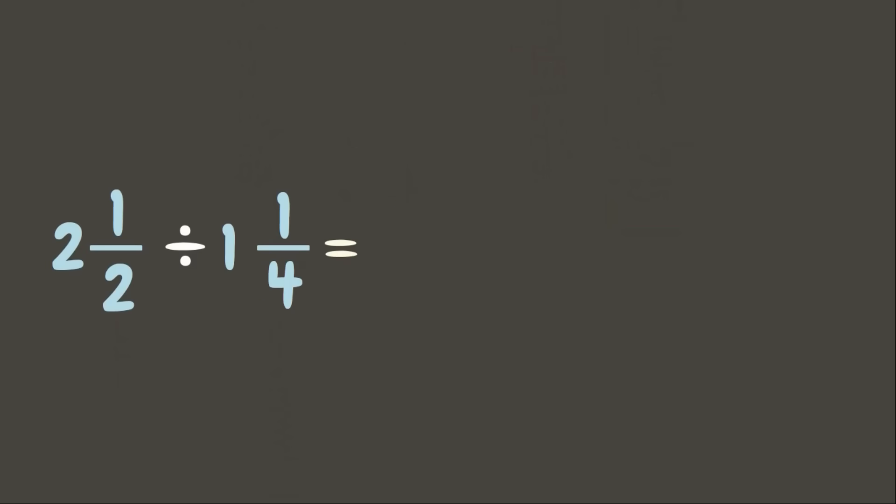Now how are we going to divide mixed numbers? First, change the mixed numbers into improper fractions. 2 times 2 is 4, plus 1 is 5. Copy the denominator: 2.